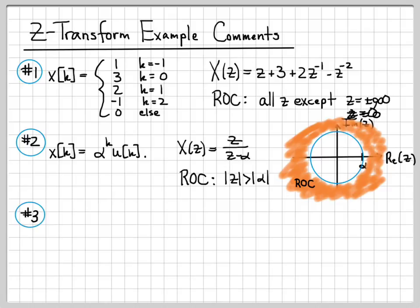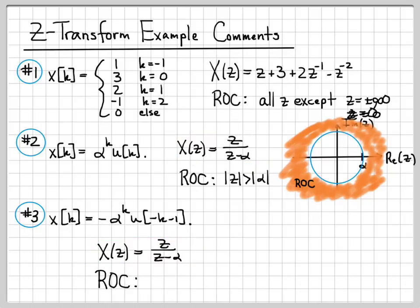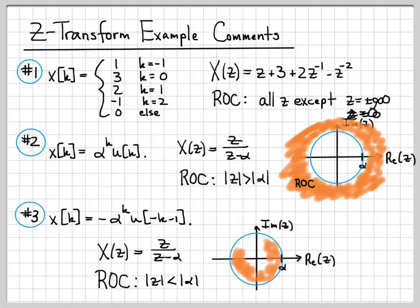In example 3, we worked with the discrete-time signal minus alpha to the k times u of minus k minus 1. We computed the Z-transform and in terms of X(z) got the exact same answer. Both were perfectly identical. The difference was the region of convergence — here, the region of convergence was the set of points where the magnitude of z is less than the magnitude of alpha, which we sketched in the complex plane.